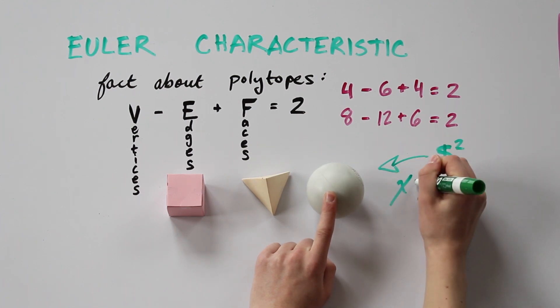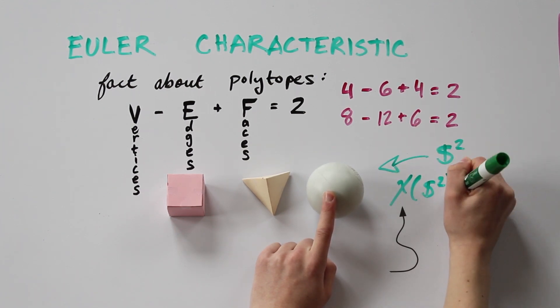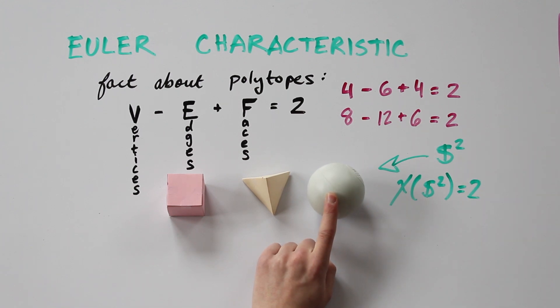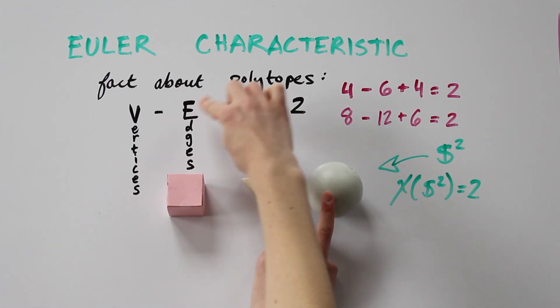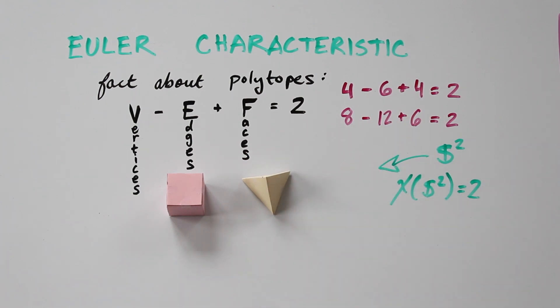And we denote the Euler characteristic with the Greek letter chi. The Euler characteristic of the sphere is two, and that is why this fact holds for all polytopes.